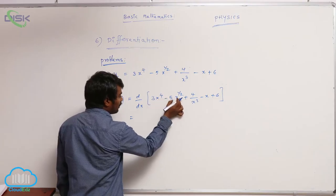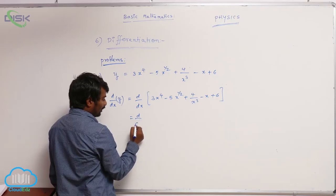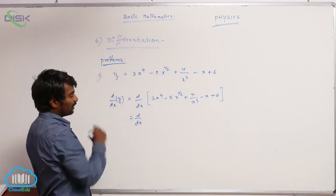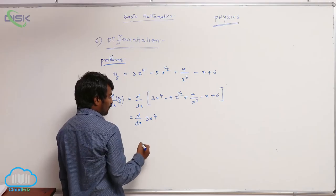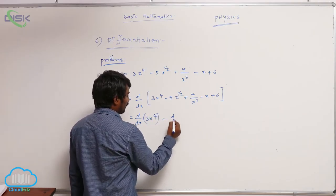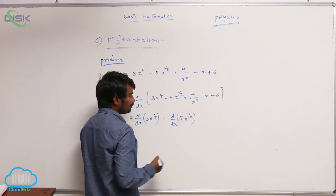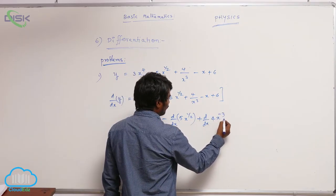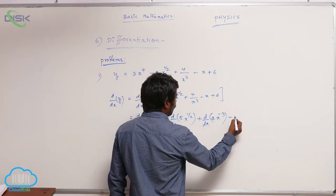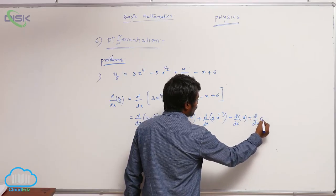For f(x) plus g(x) plus h(x) and so on, we have to write separately. From the first rule, d/dx of f(x) plus g(x), I am going to write d/dx of 3x^4 minus d/dx of 5x^(1/2) plus d/dx of 4x^(-3) minus d/dx of x plus d/dx of 6.